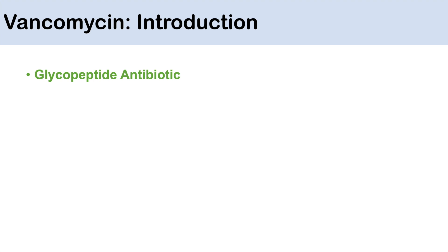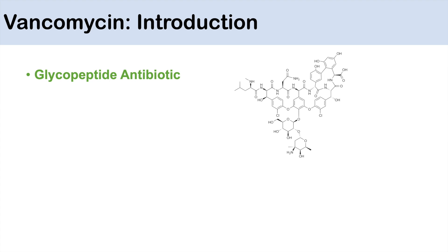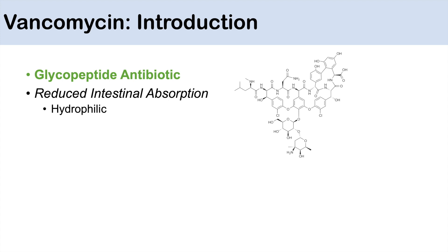Vancomycin is a glycopeptide antibiotic. Here is a picture of vancomycin — as you can see, it's quite a large and complex molecule. Vancomycin has reduced intestinal absorption because of its hydrophilic nature, and as such, we typically give it in IV form.